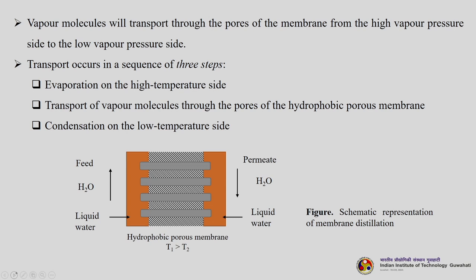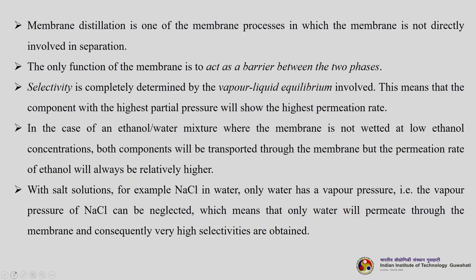Transport occurs in a sequence of three steps: first, evaporation on the high temperature side; second, transport of vapor molecules through the pores of the hydrophobic porous membrane; third, condensation on the lower temperature side. Membrane distillation is one process in which the membrane is not directly involved in the separation — its only function is to act as a barrier between the two phases. Selectivity is completely determined by the vapor-liquid equilibrium: the component with the highest partial pressure will show the highest permeation rate.